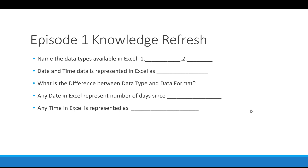In Excel we have two data types that are really important and we should always keep an eye on those. Those data types are number and text. The second question is: how is date and time data represented in Excel?